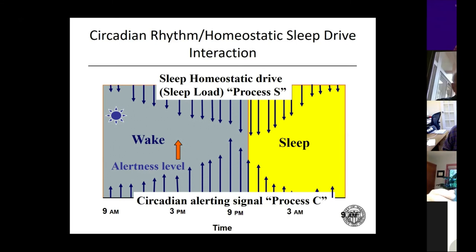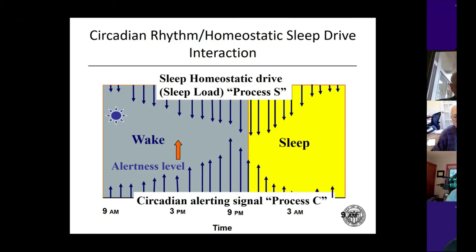Process S is the homeostatic sleep drive: simply, the longer you're awake, the greater your drive to sleep. We think it's the buildup of adenosine in the brain in the median preoptic area. As your body consumes ATP to ADP to AMP, you ultimately produce adenosine, which builds up this homeostatic sleep drive. These two processes oppose each other — the need to sleep is increasing across the day, and if the circadian alerting signal did not also increase, you wouldn't be able to stay awake later in the day. There's also a natural dip in the circadian alerting signal around 2–3 in the afternoon — that's why the line for coffee is longest then. It's not a postprandial thing; it's a natural part of Process C.